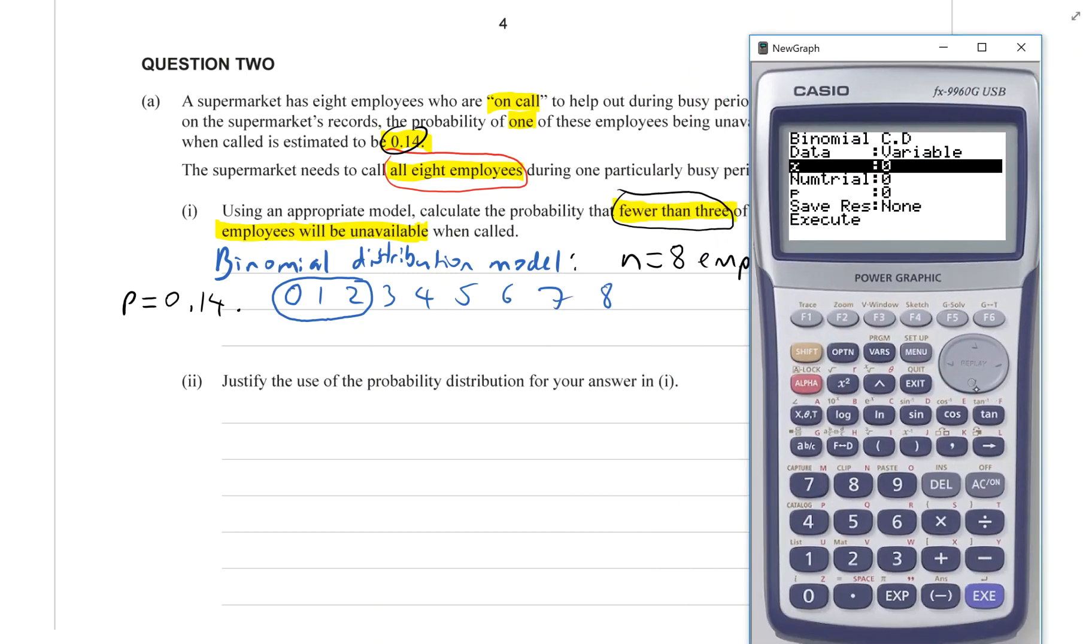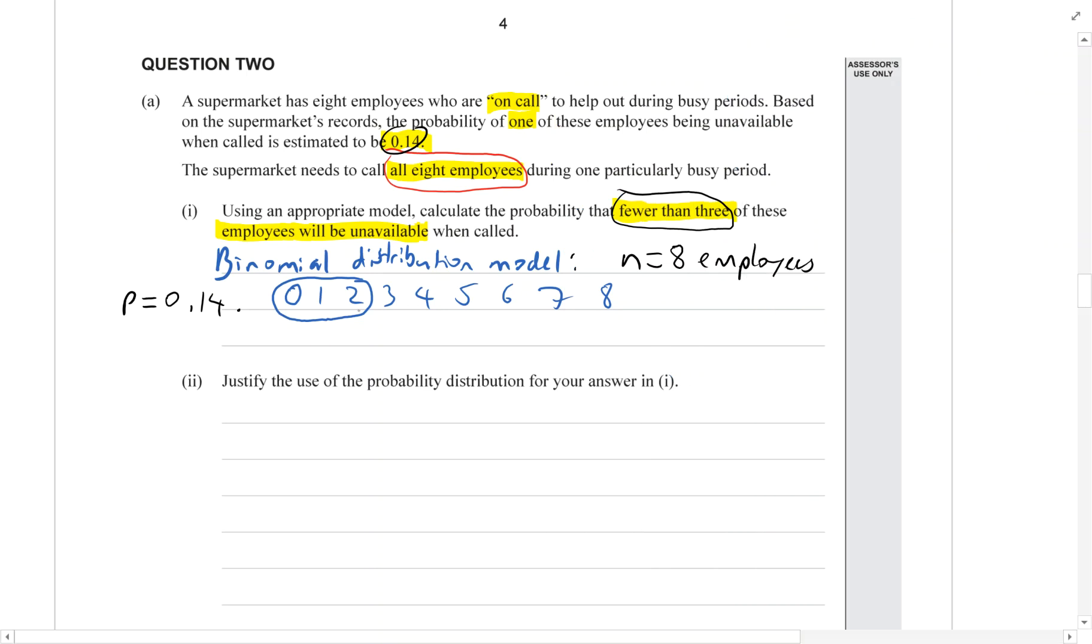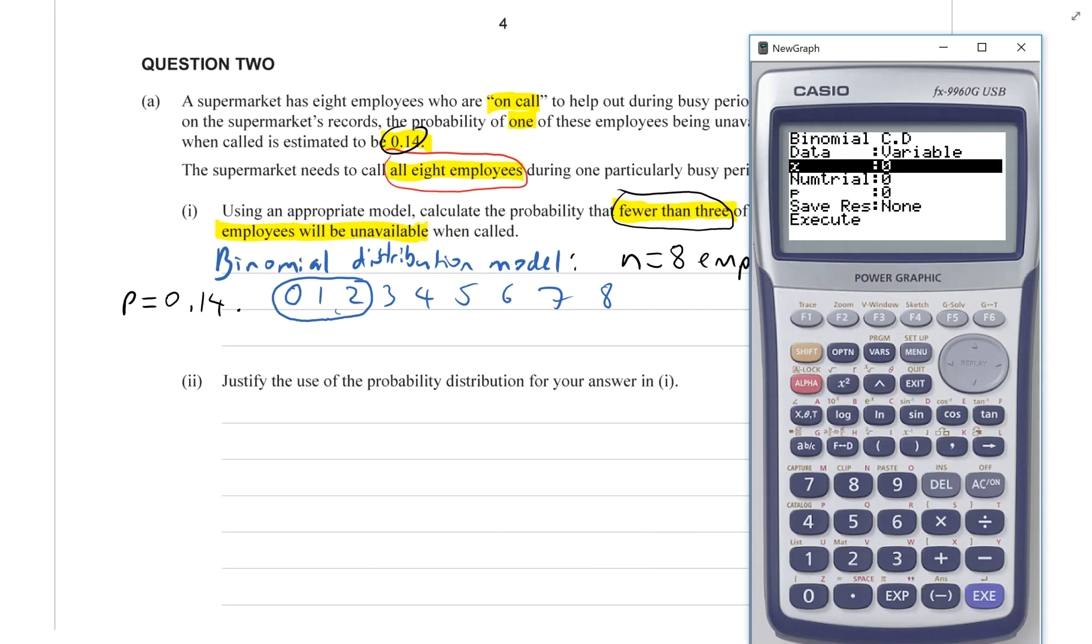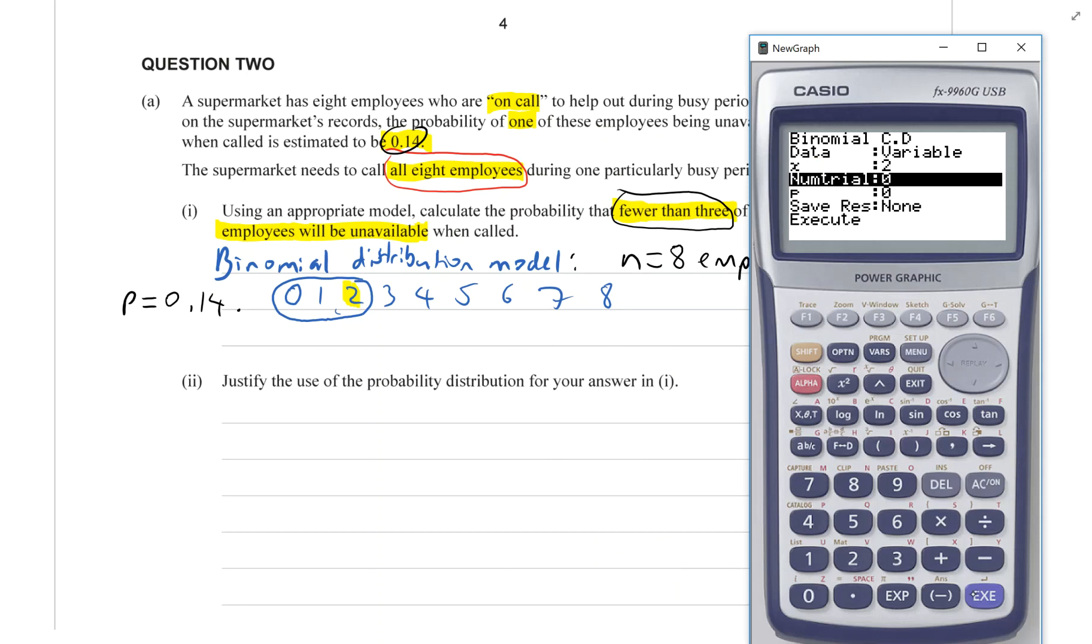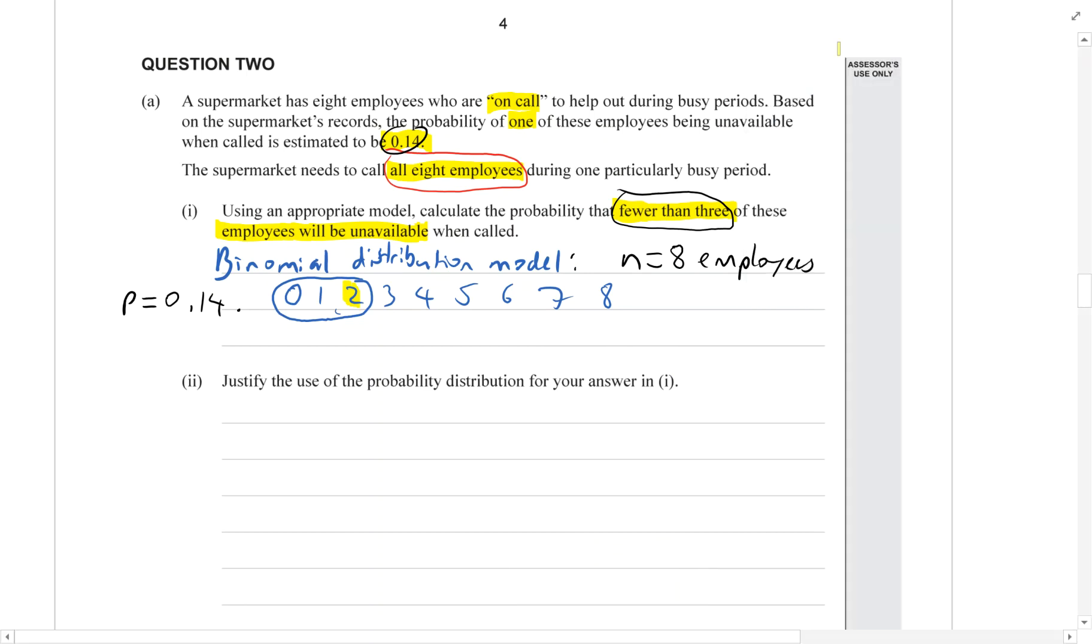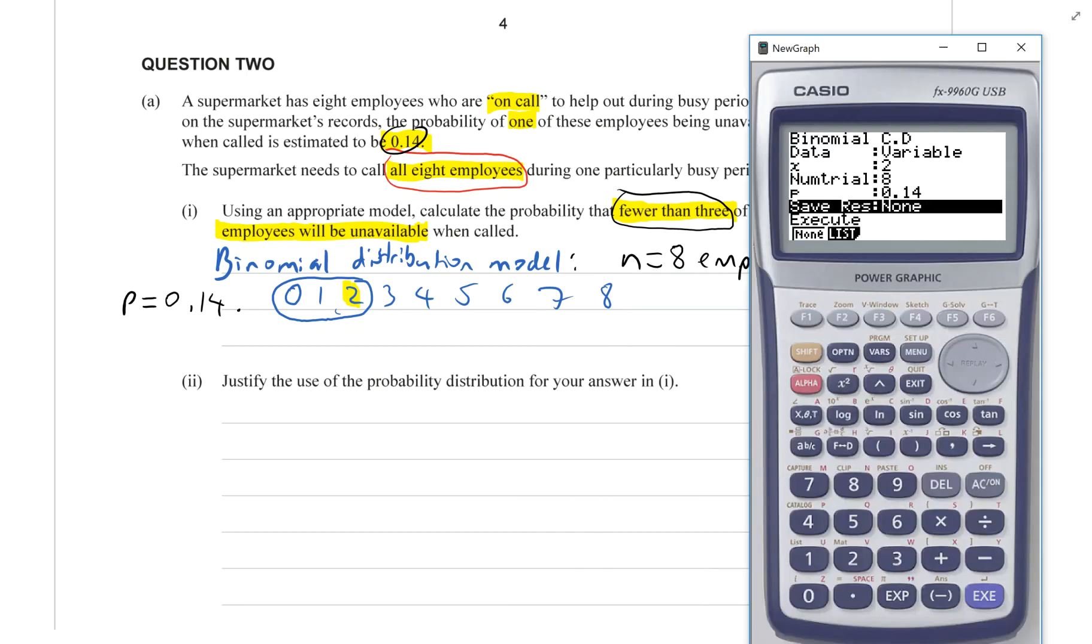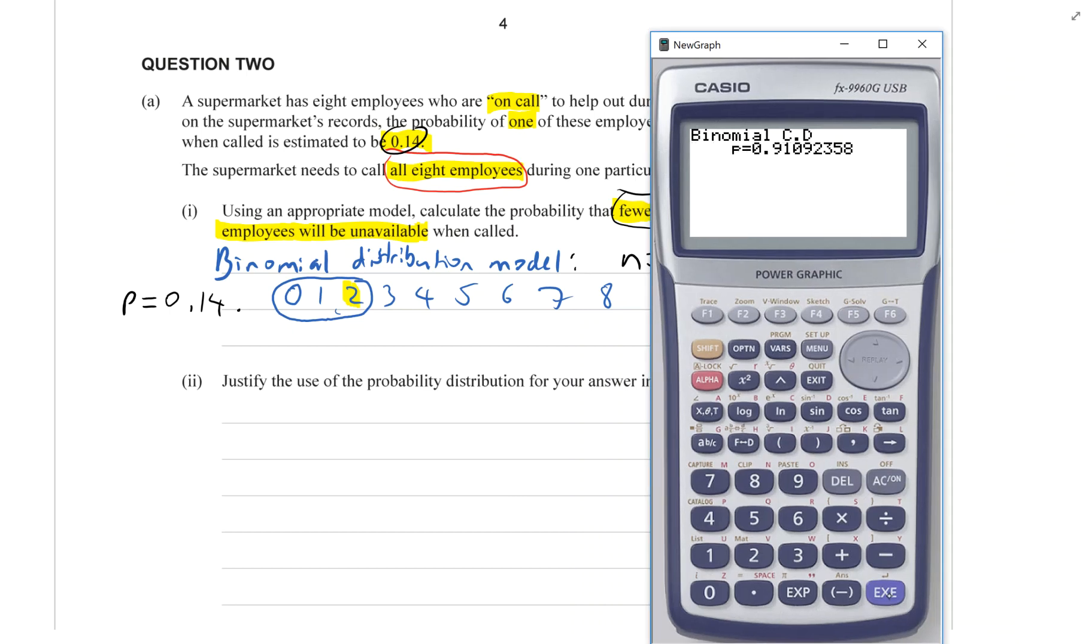Number of, now we want the maximum number of successful outcomes. So the maximum number who are unavailable. And that is two. I'm going to type in two. Number of trials is eight employees. Probability of success is 0.14. And execute. I get 0.9109 to four significant figures.